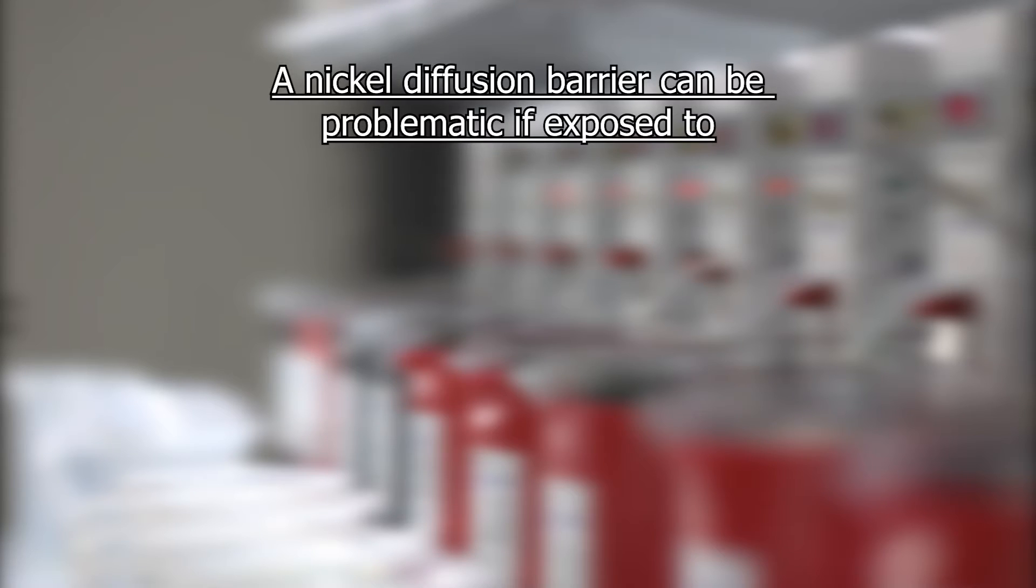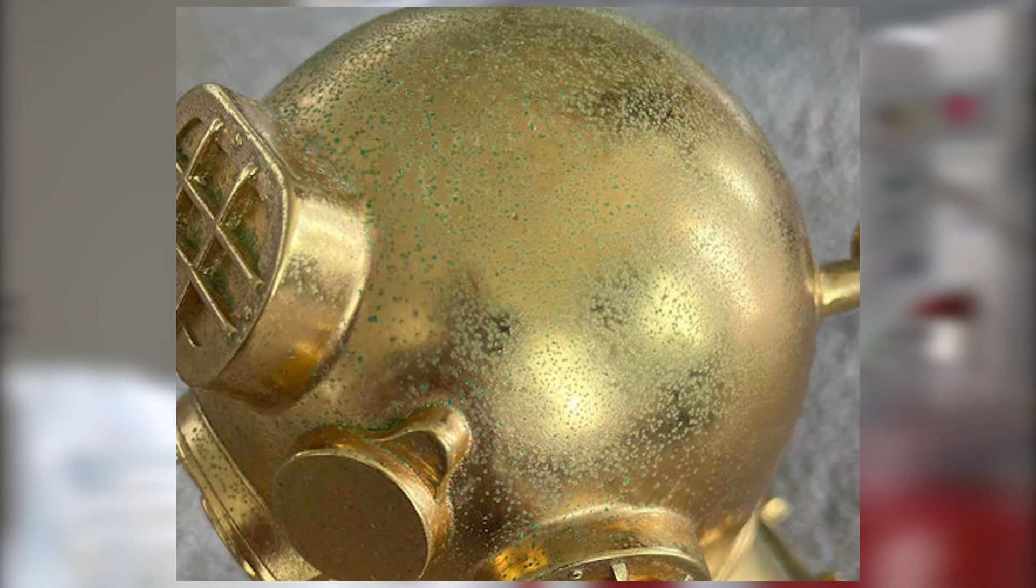A nickel diffusion barrier can also be problematic if it is exposed to sea air or any environment where the item may be exposed to salt, salt water, or salt mist. This is a photo of a gold-plated item where the nickel is diffusing through the gold plating due to exposure to salt spray. The green crystals are nickel salt crystals and they have diffused through the gold plating. Nickel often works well as a diffusion barrier, but not in every application as you can see.